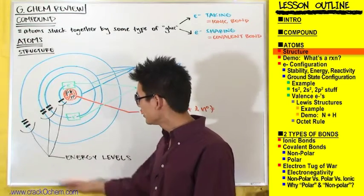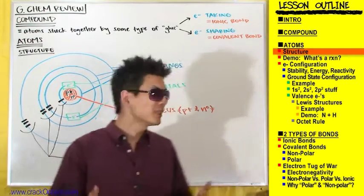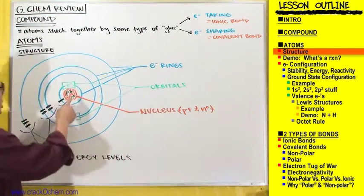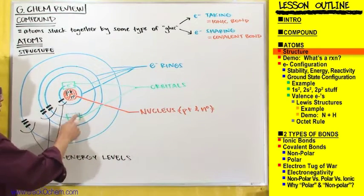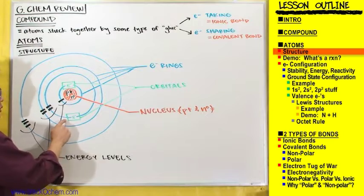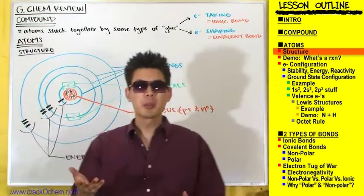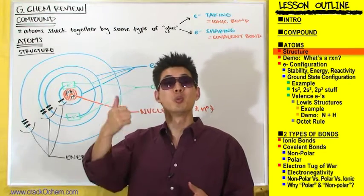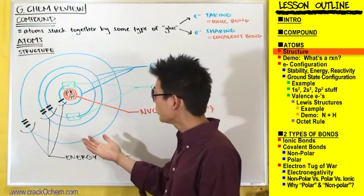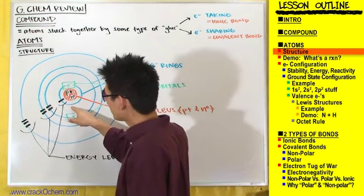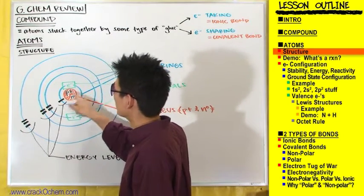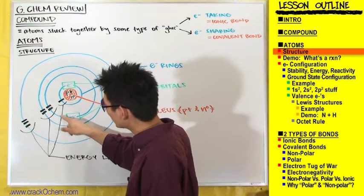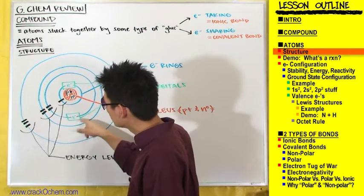Now that we've covered energy levels, we can add something about orbitals. So far we've only drawn one orbital for each electron ring. The rule is that the first electron ring of an energy level gets one orbital — and this is exactly what we see here. This is the first electron ring of the first energy level, so we drew one orbital. Same thing here: it's the first electron ring of the second energy level, so we only drew one orbital. That one orbital is known as an s orbital.